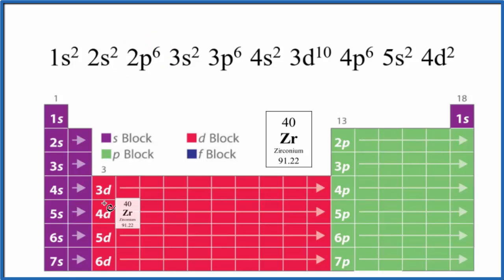3s2, 3p6, 4s2. And after 4s2, we go to 3d, and d can hold up to 10. So we have 3d10.